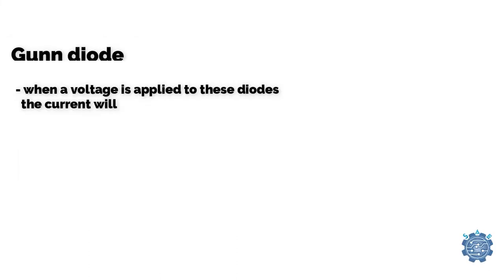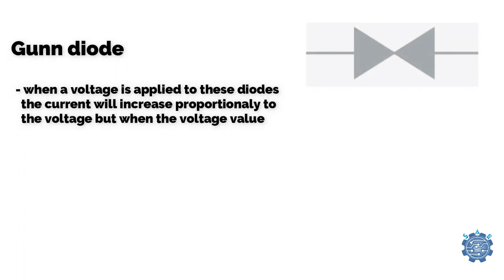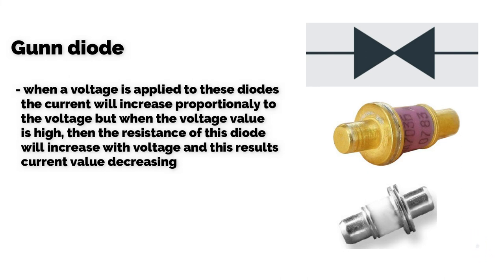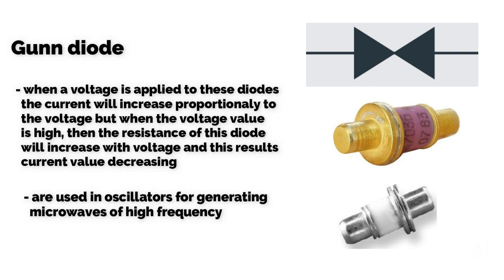The last is the Gunn diode. When a voltage is applied to these diodes the current will increase proportionally to the voltage. But when the voltage value is high, the resistance of this diode will increase with voltage, resulting in current value decreasing. These diodes are used in oscillators for generating microwaves of high frequency.